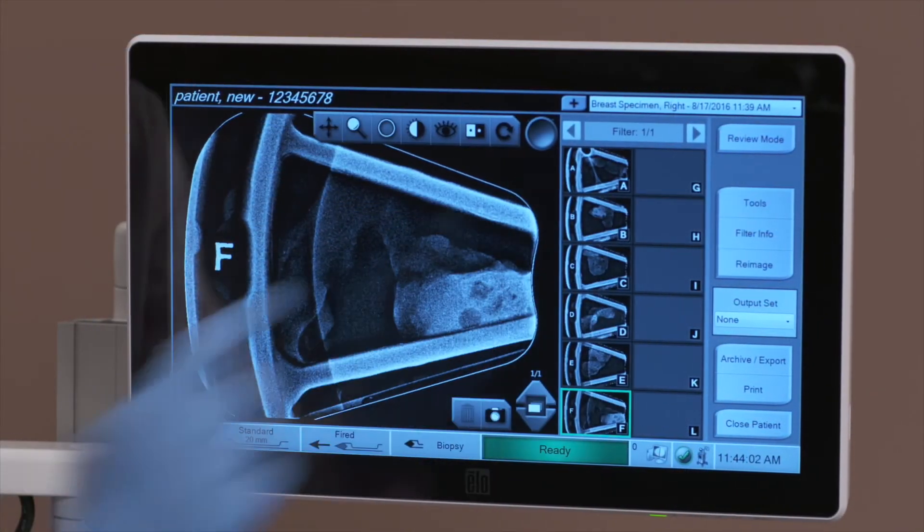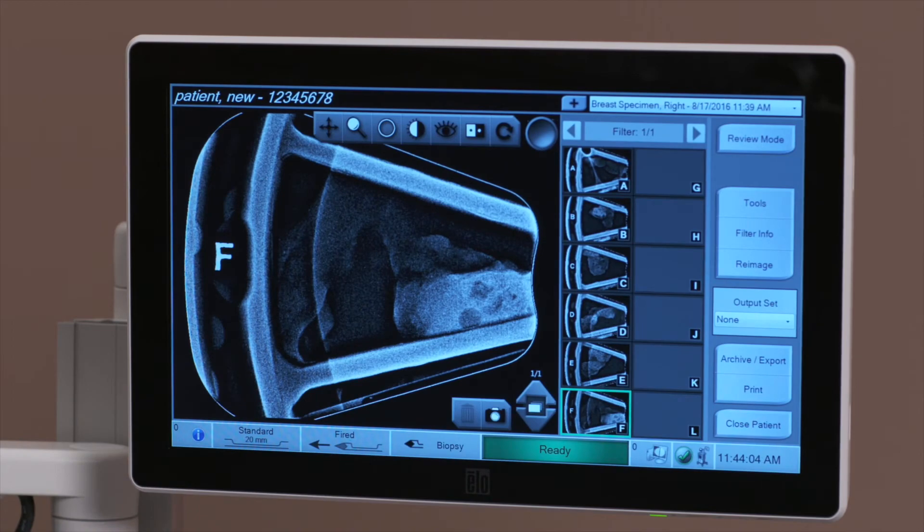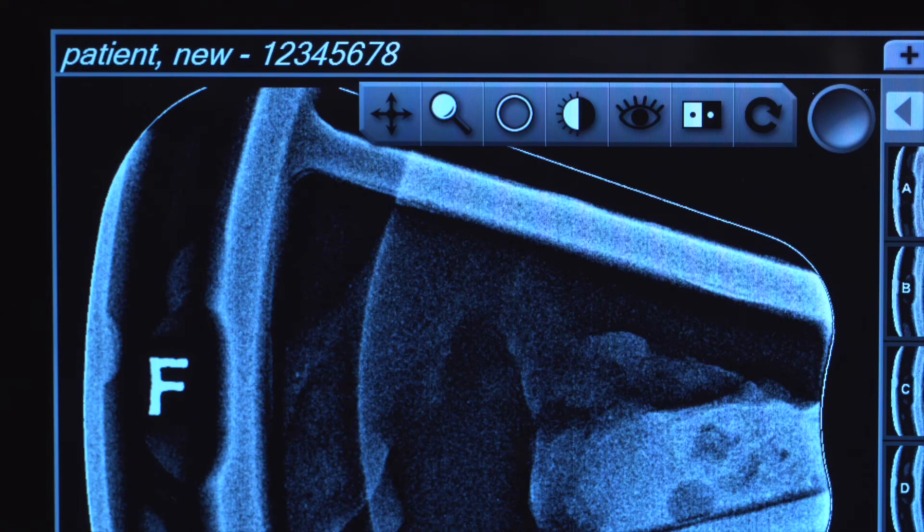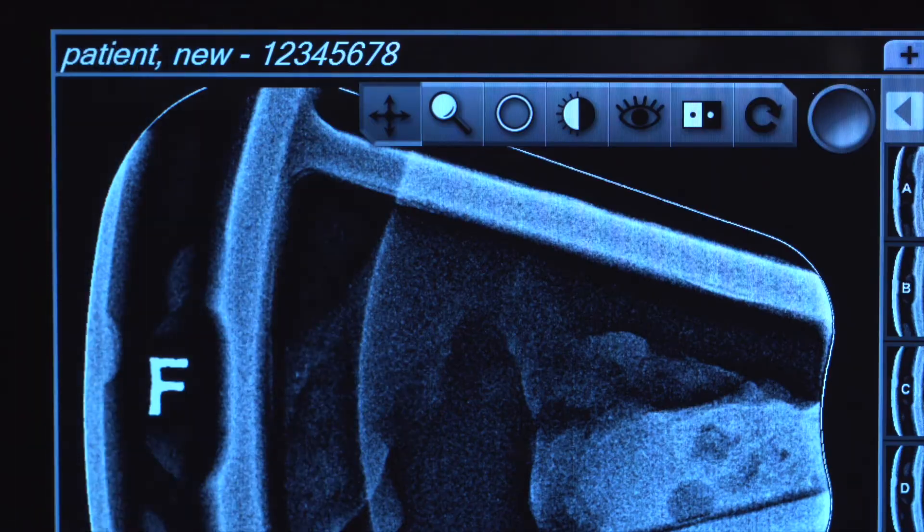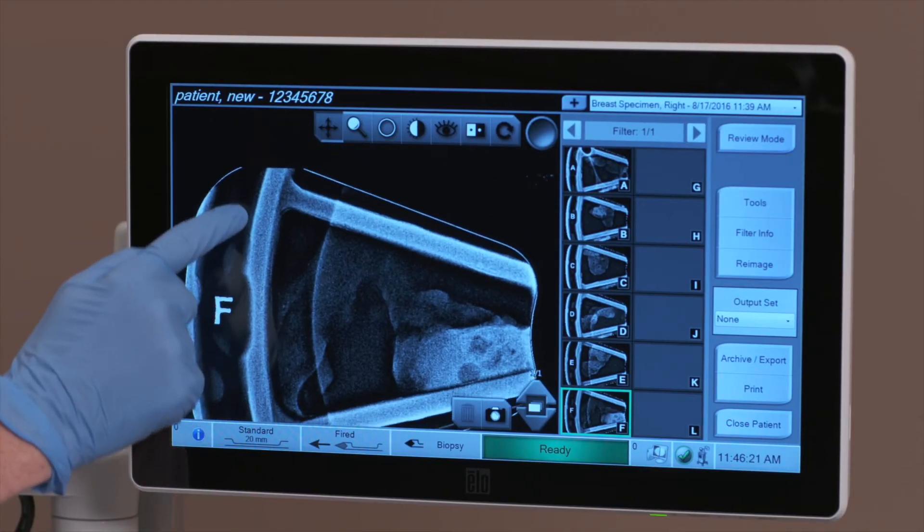Select the tools button to access the image review tools bar which contains several additional imaging tools. Starting from left to right, there are several tools the physician may opt to use. The pan tool is used to move the view to a different portion of the image.